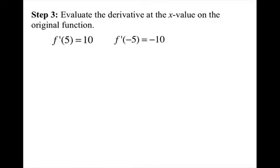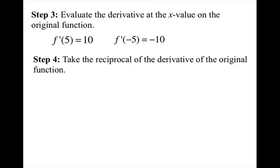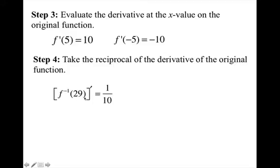Plugging in −5 gives −10. Step 4: take the reciprocal of the derivative. So the derivative of f⁻¹ at x = 29 on the inverse is 1/10, or −1/10.